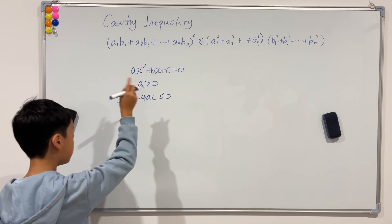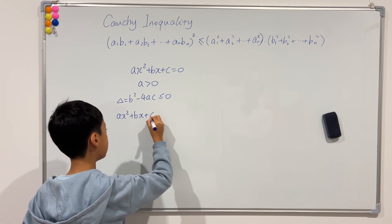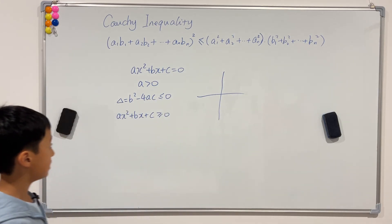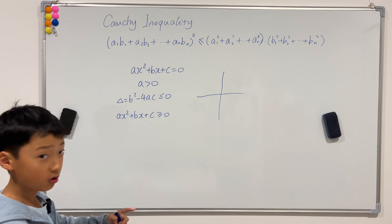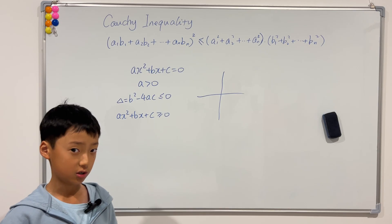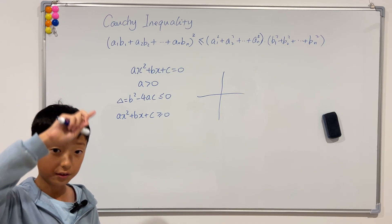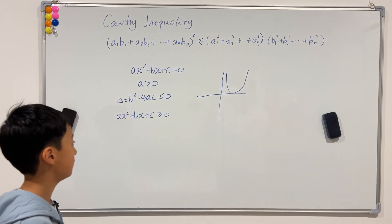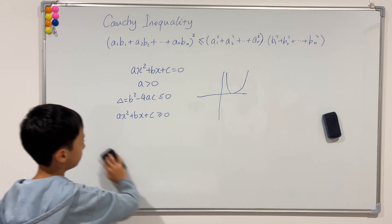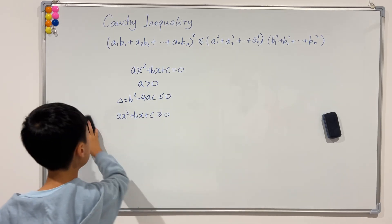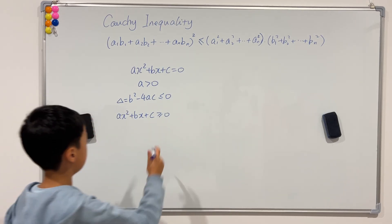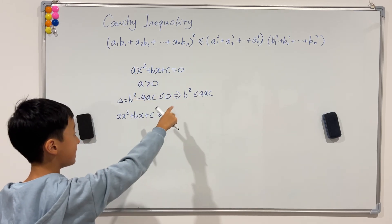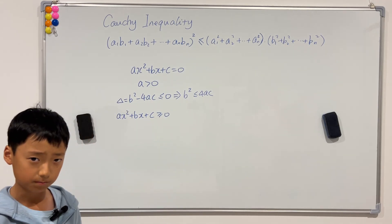Then we get that the quadratic ax² + bx + c has to be always greater than or equal to zero. Because if I draw a graph — if a is greater than zero, it's concave up — and if the delta is less than or equal to zero, it can have either zero or one intersection, and that one intersection can only be a tangent. So in the worst case it's still greater than or equal to zero. If we rearrange delta to get b² ≤ 4ac, isn't that really similar to something squared being less than or equal to something times something? Just the four is missing.